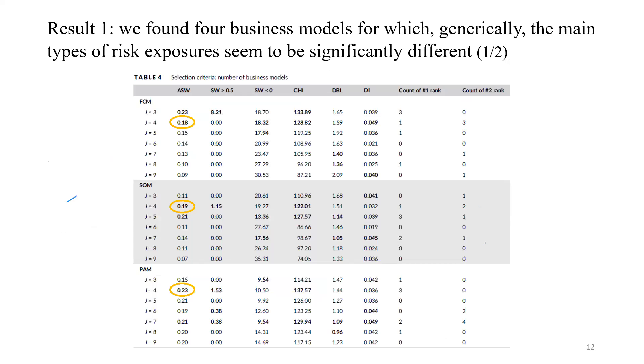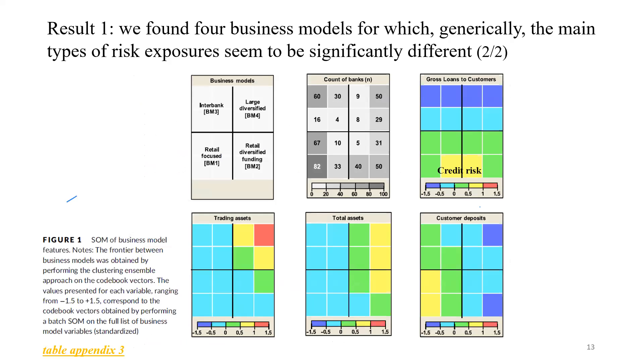Quickly checking some results. The first result is that we found four business models for which there is significant difference in terms of risk exposure. This table shows the step related to assessment of cluster quality. You see there is some consensus among the silhouette width and the Kalinsky-Harabas index regarding the four partition solution, so that's why we use four business models.